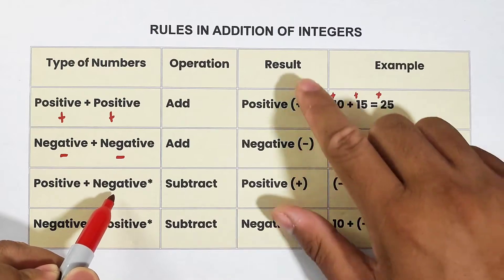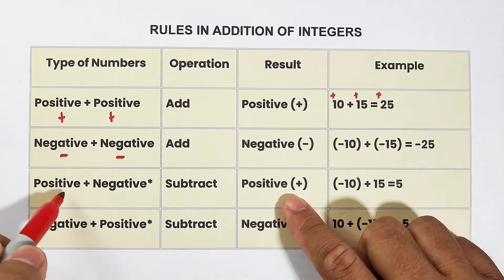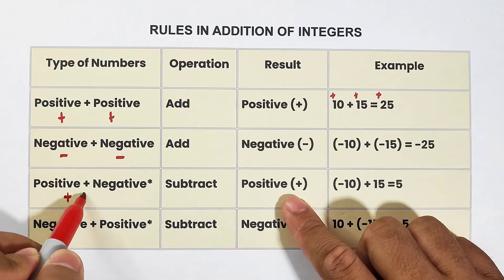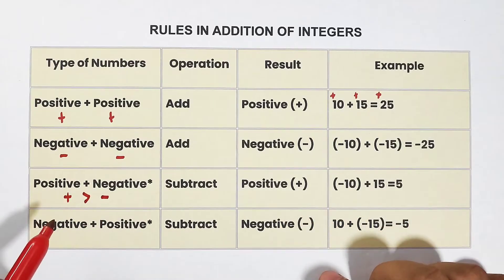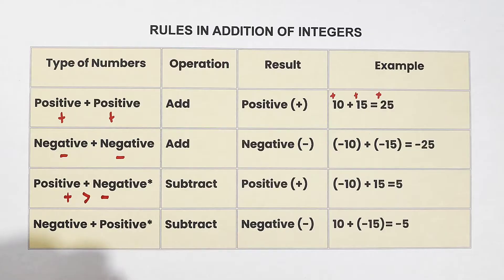Now, why is the result positive? This happens if the positive integer is greater than the negative integer. I mean, the absolute value of it.